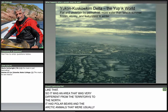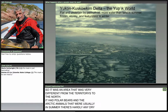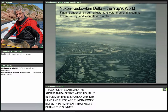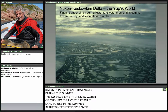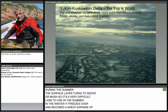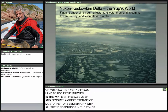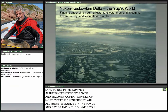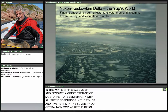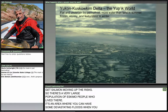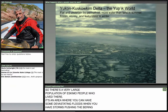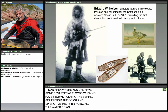This slide really shows what Yupik country is like — a real watery land in summer. There's hardly any dry land; these are all tundra ponds based in permafrost that melts during the summer, and the surface layer turns to water or mush, making it very difficult to use. In winter it freezes over and becomes a great expanse of featureless territory with resources in the ponds and rivers. In summer you get salmon moving up the rivers. It's a very rich environment with a large Eskimo population, though devastating floods can occur when Bering Sea storms push inland.